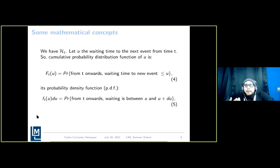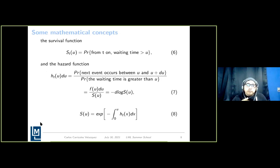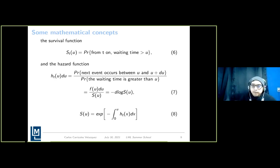The main idea is based on the waiting time of these processes. The cumulative probability distribution of the waiting time until the next event from time t can be described by equation four, and its conditional probability density function is function five. The survival function (equation six) is the probability that an event from time t has a waiting time greater than u. The hazard function is the probability that the next event occurs between time u and u + du, measured relative to the probability that the waiting time is greater than u, given as equation seven.